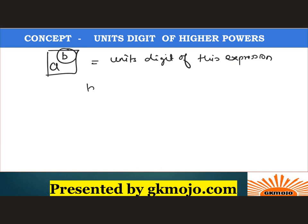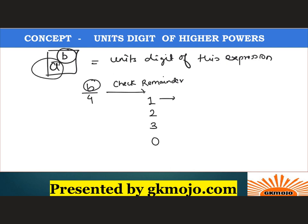In this case, just focus on the power b. Divide b by 4. You will get 4 different cases — the remainder can be either 1, 2, 3, or 0. When you get remainder 1, take the unit digit of the complete number and raise it to the power 1 — that is the unit digit of the expression. If the remainder is 2, raise the unit digit to the power 2. If the remainder is 3, raise the unit digit to the power 3.